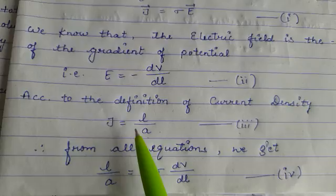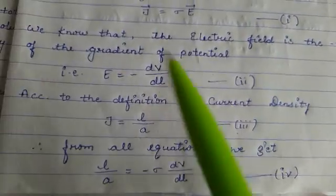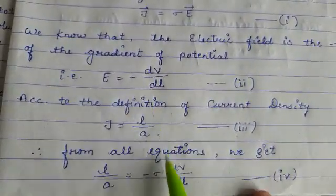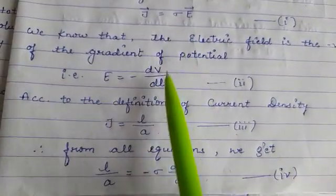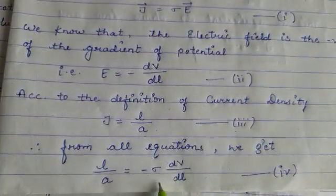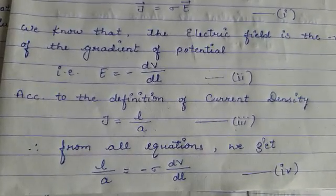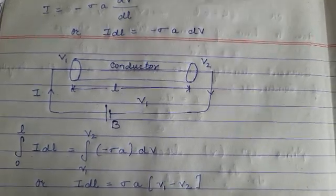When we summarize these three equations, we know the value of J from equation third. So I'm writing I over A equals, from equation second, negative sign sigma, and the value of E from equation two, dV over dl, marked as equation number four.